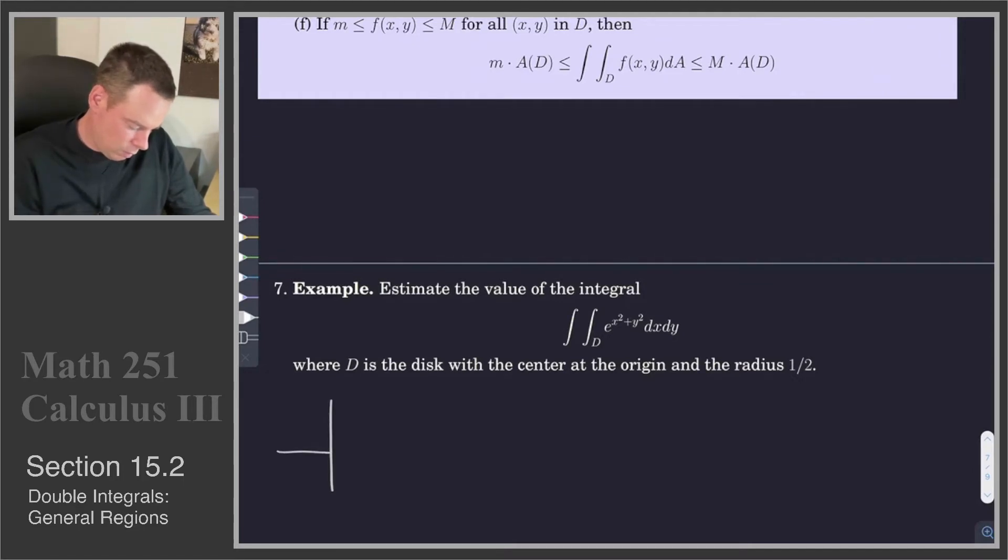So we are interested in integrating that function e to the x squared plus y squared over this circular disk. Let's fill it in, and this circular disk has a radius of a half. So that's a half and a half, or in other words, it's x squared plus y squared is equal to a quarter. So that's the region we are integrating over.